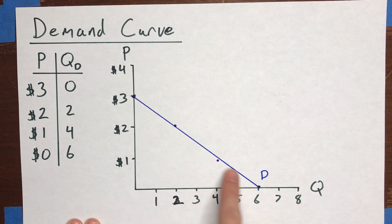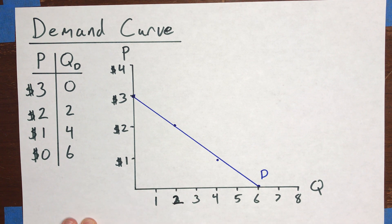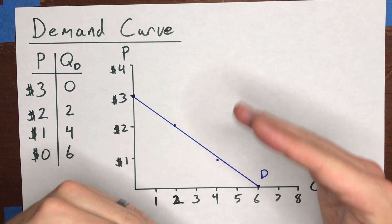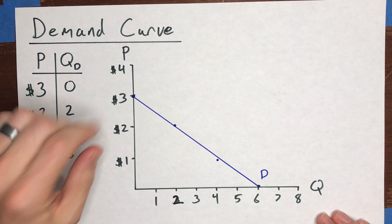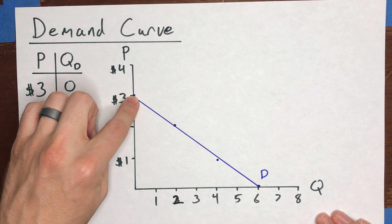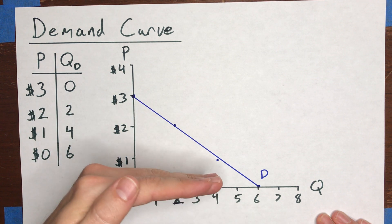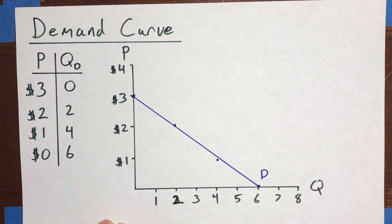You'll notice the demand curve is downward sloping. You can get this downward slope through two different types of reasoning. The first is the reasoning we used in this example: every consumer is thinking about buying a single unit and they have differences in taste. Whoever is willing to pay the most shows up at the top of the demand curve, and as you cut the price, people who are willing to pay less start showing up in terms of the quantity demanded.